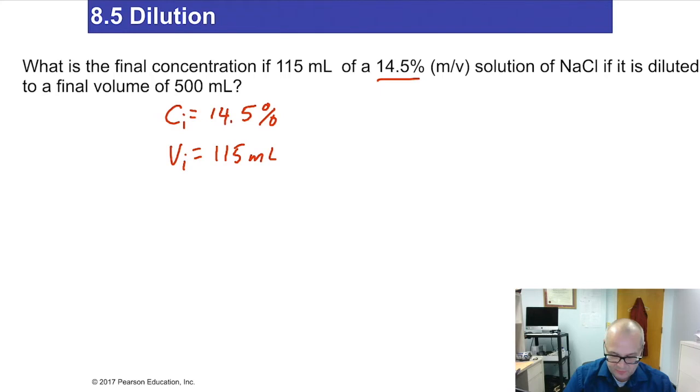C two, or I'm sorry, I was taught C one, C two. Your book uses Cᵢ, CF. So I'll try to use the same thing the book uses. CF is the question mark. It's what we don't know. VF equals 500 milliliters. All right. So there's our three knowns and our one unknown. We know the formula. CᵢVᵢ equals CF VF.